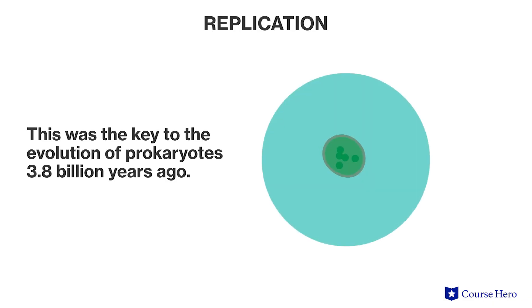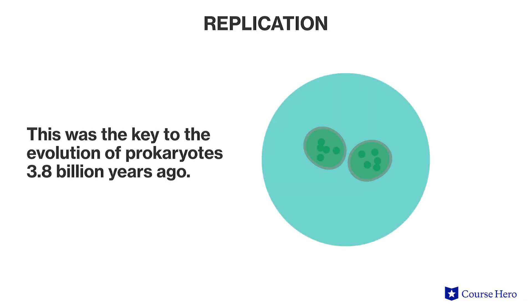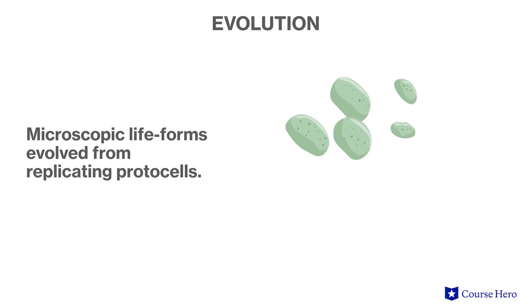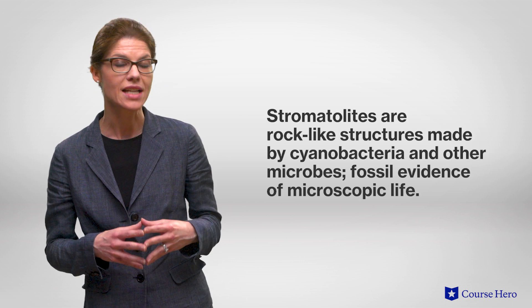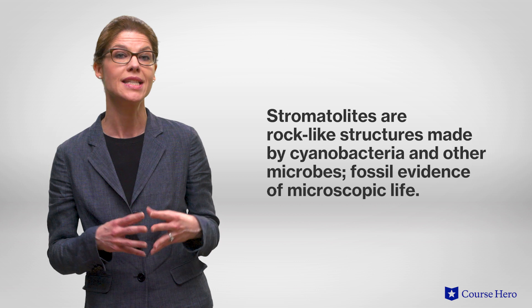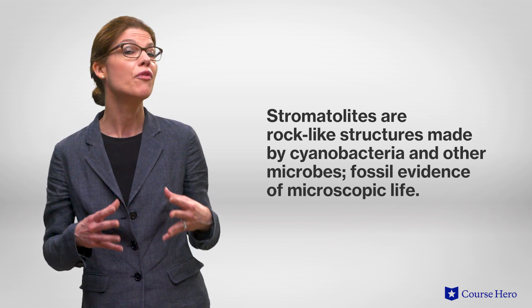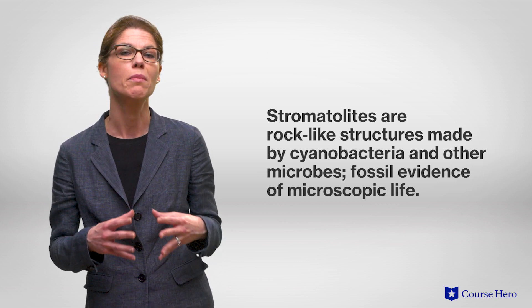Over time, mutations of these protocells occurred, resulting in cells that replicated quickly. The ability to replicate was the key to the evolution of prokaryotes at about 3.8 billion years ago, as it allowed for the passage of favorable traits that make offspring more suited to the environment. Microscopic lifeforms evolved from replicating protocells, and some of these early lifeforms left fossil evidence. Stromatolites — rock-like structures made by cyanobacteria and other microbes — are fossil evidence of these microscopic lifeforms.